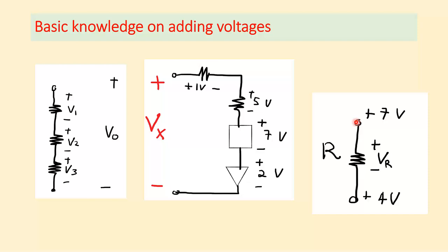With a multimeter: if the red terminal touches the 7-volt node and the black terminal goes to ground, you see 7 volts. If the red terminal goes to the 4-volt node with the black to ground, you see 4 volts. But if the red terminal is at 7 volts and the black is at 4 volts, you see 3 volts — the voltage across the component.